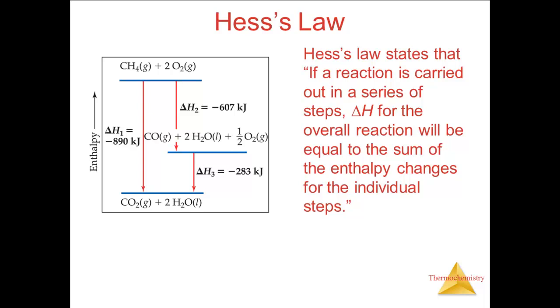In the example shown, we are reacting methane gas with oxygen gas to make carbon dioxide gas and liquid water. However, we are doing this in two steps. In the first, we make carbon monoxide gas and liquid water. And in the second, we take the carbon monoxide gas and combine it with more oxygen to make CO2 gas. In general, the form of the mathematical equation looks like this: Delta H for the overall reaction equals delta H for reaction one plus delta H for reaction two plus delta H for reaction three and so on until we run out of reactions.